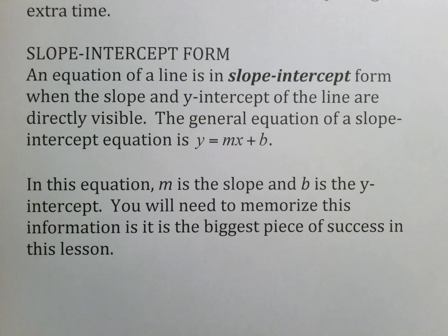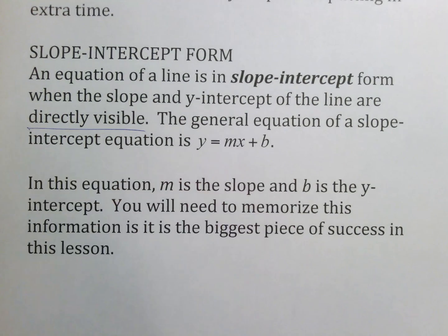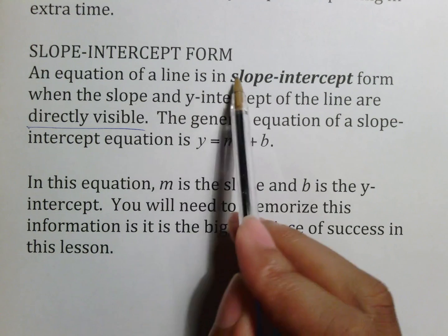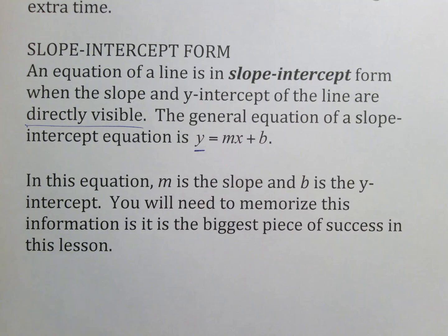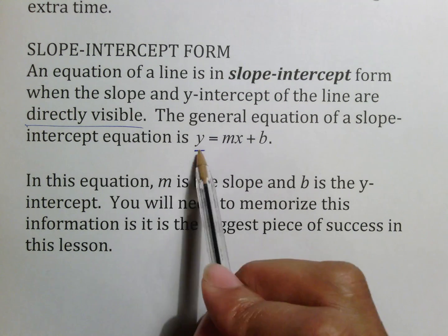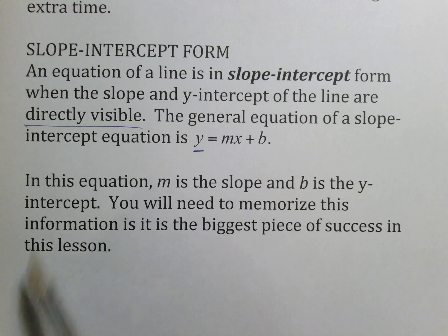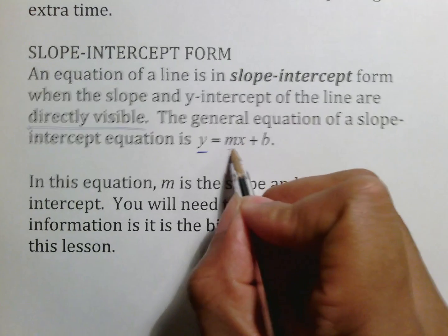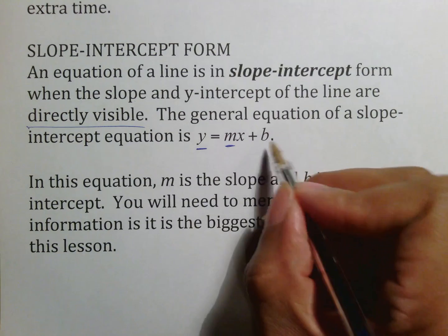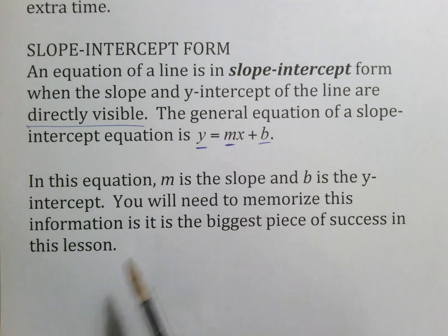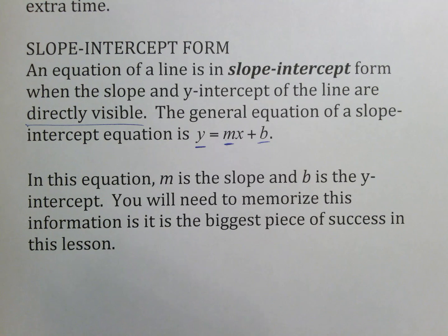Slope-intercept form: an equation of a line is in slope-intercept form when the slope and the y-intercept are directly visible. The general equation is y equals mx plus b. The way you identify slope-intercept form is that y is alone. In this equation, m is the slope — representing rate of change — and b represents your y-intercept. You have to memorize those two things because they are very important.